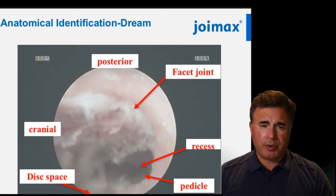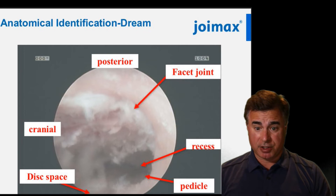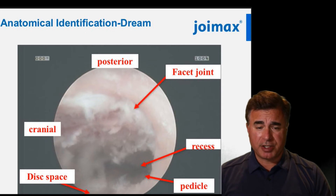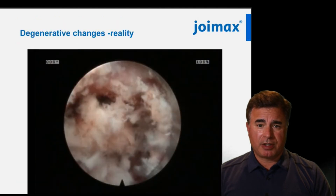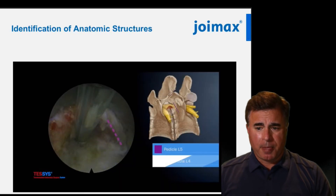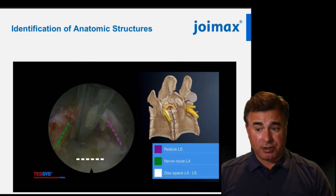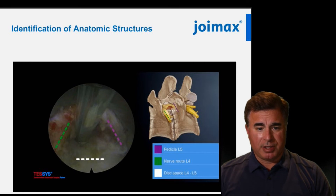Next, I like to identify bony landmarks early on so you'll always be able to tell where you are. It's easy to get lost, especially when you start off, so having something familiar such as bony landmarks is really advantageous. If you identify the pedicle and the facet joint, you know where the lateral recess is and that's where your neural structures are likely to be. When there's a lot of degeneration it's not always easy to define your anatomic structures, so I like to think of it simply: identify structures that don't move, such as the pedicle (marked here in purple), then identify structures you could injure, such as the nerve root (marked in green), and know that everything in between is disk material (marked in white).